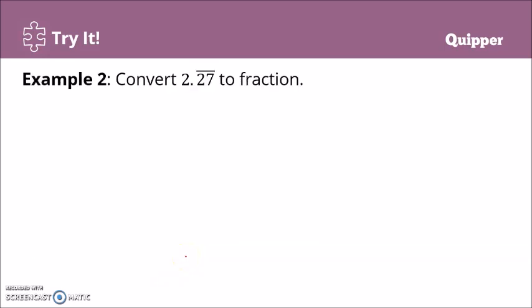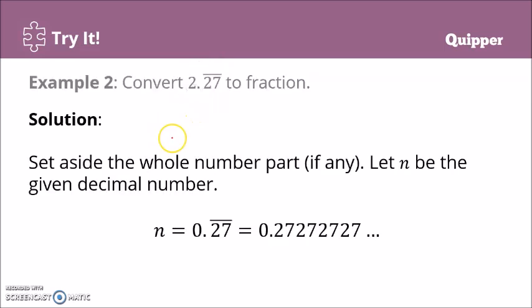Example number 2. Let's convert 2.27 bar to fractions. Notice that this is a repeating and non-terminating decimal. We take this 27 bar and set aside the 2. Let N be the given decimal number. N equals 0.27 bar.